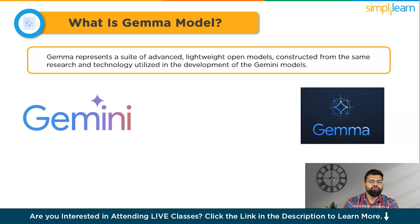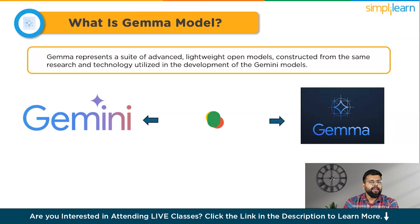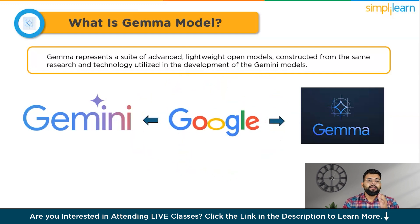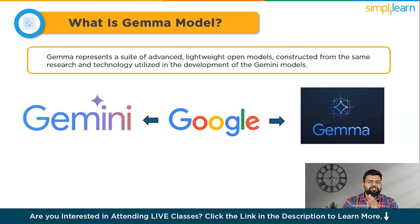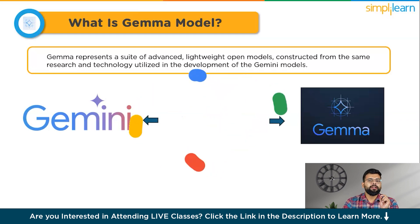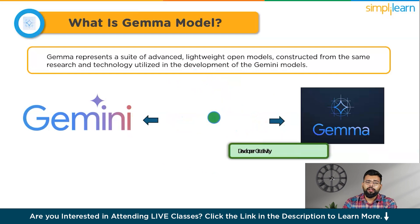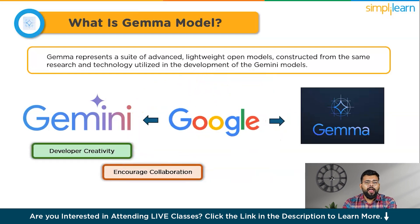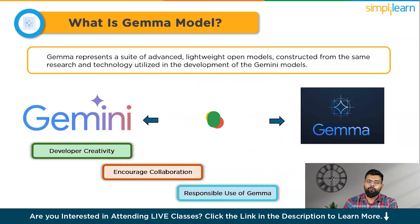Gemma represents a suite of advanced, lightweight, open models constructed from the same research and technology utilized in the development of the Gemini models. Formulated by Google DeepMind and other Google teams, Gemma draws inspiration from Gemini, and its name derives from the Latin term Gemma, signifying a precious stone. In addition to providing model weights, Google is also unveiling tools that promote developer creativity, encourage collaboration, and promote the responsible use of Gemma models.